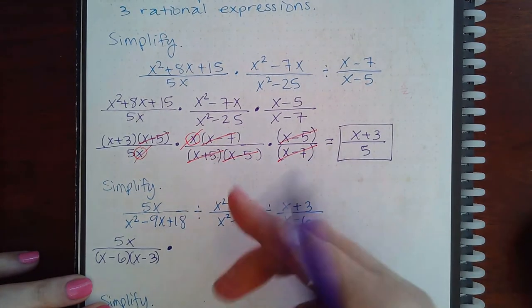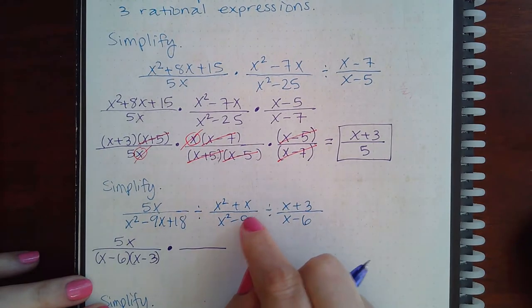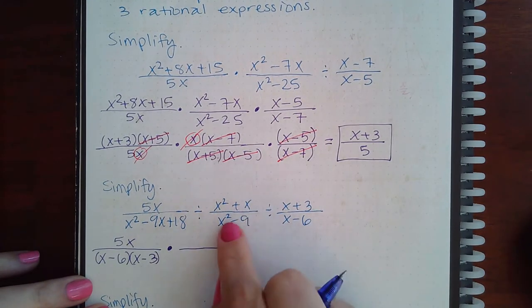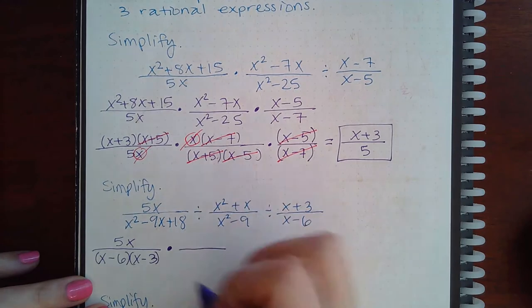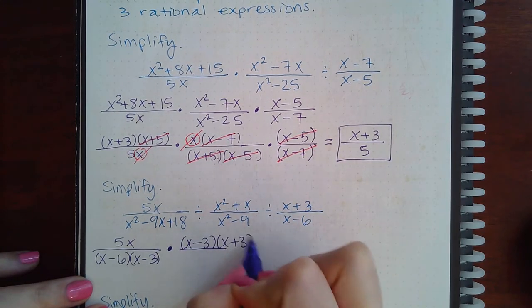Then I'm going to do times. And I'm going to flip this over. But when I flip this over, I'm going to do two steps in one. Not only am I going to flip it over, but I'm also going to factor it. So x squared minus 9 is going to be at the top. And that factors into x minus 3 and x plus 3.